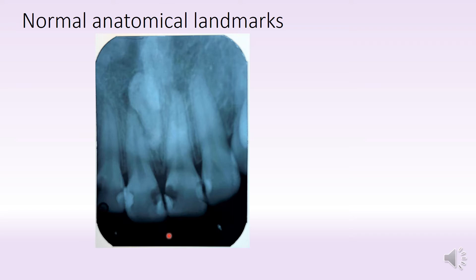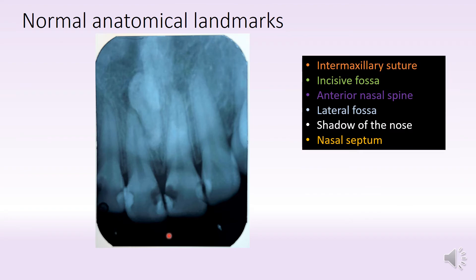So in this radiograph, let us look at what we have. First of all, there is the intermaxillary suture, indicated by the orange line, which lies in between the incisors. Then we have the incisor foramen, kind of shifted here — the shadow is probably because of the way the radiograph has been taken.